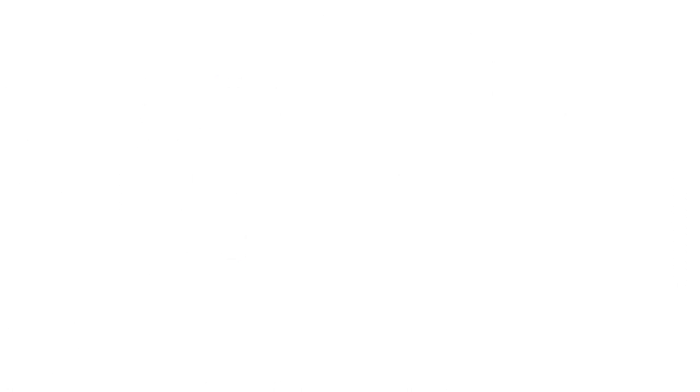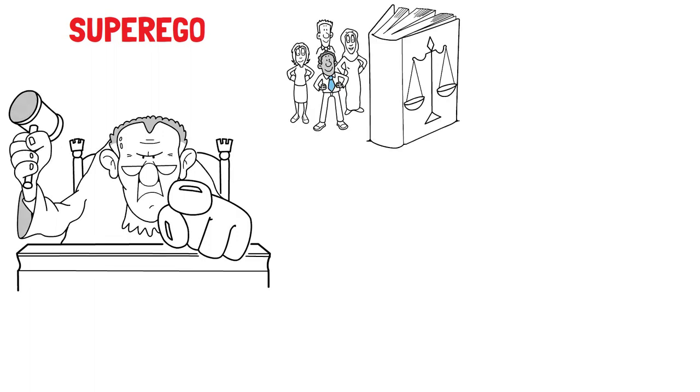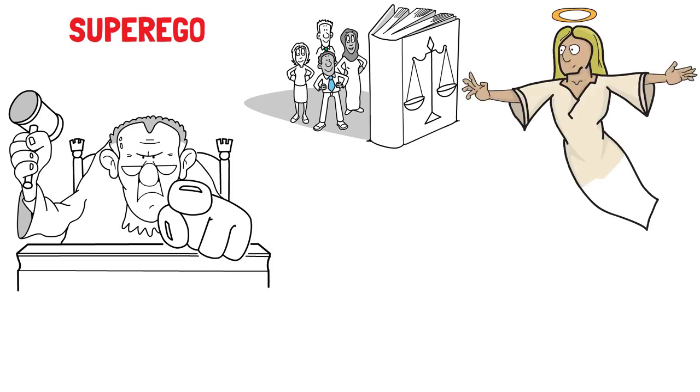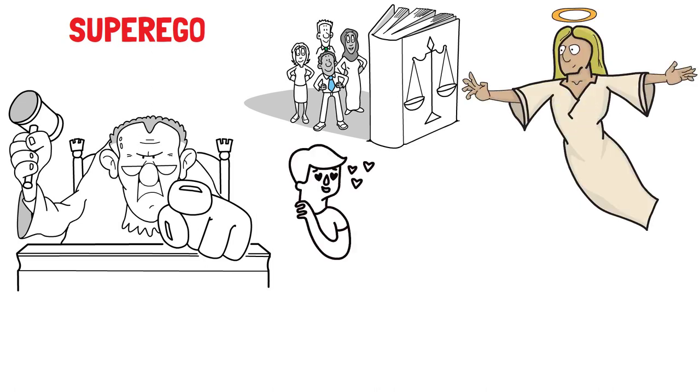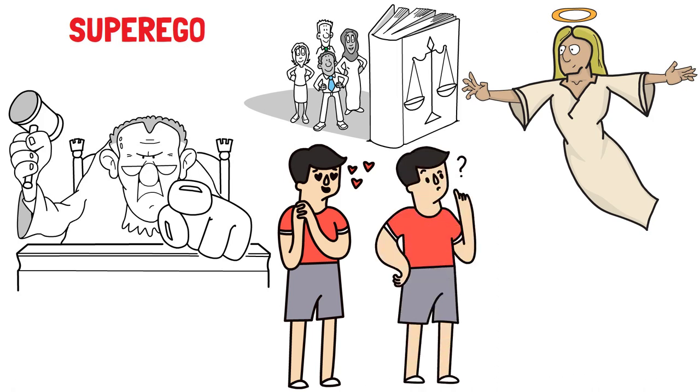Then comes the superego. Imagine it as the strict moral authority within your mind. It embodies societal and ethical norms, serving as a guardian of what's right and wrong. If the id represents our primal desires, and the ego balances them with practicality, the superego represents our conscience.